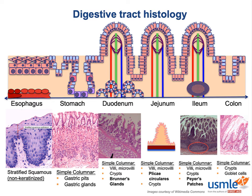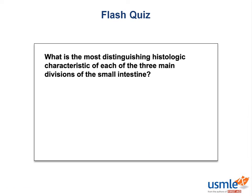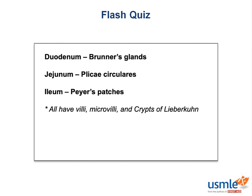Time to reward your dedication with a flash quiz: what is the most distinguishing histologic characteristic for each of the three main divisions of the small intestine? The duodenum is characterized by Brunner's glands — the tightly packed glands that secrete bicarbonate-infused mucus to neutralize stomach acid. The jejunum has nothing that truly histologically defines it, but in some slides you may see the macrostructure of plicae circularis. Finally, the ileum contains Peyer's patches, lymphoid follicles buried in the submucosa that increase enteric immunologic defense. All three have villi, microvilli, and crypts of Lieberkühn, so you need to pick out which feature makes each one unique.